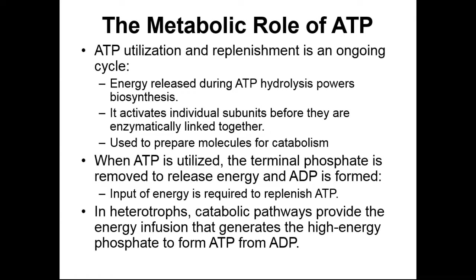We use ATP to replenish and regulate our necessary chemical reactions, and we constantly need to make more ATP. During ATP hydrolysis, the energy released from ATP powers biosynthesis or anabolic chemical pathways — it activates or phosphorylates individual subunits before they can be linked together to make larger molecules. We also use ATP to prep molecules for catabolic chemical reactions. Before we start breaking down big molecules, we need to use a little bit of ATP to kickstart the chemical reactions. Most catabolic chemical pathways require a little bit of energy input at the beginning before the reaction can proceed and lots of energy can be released.